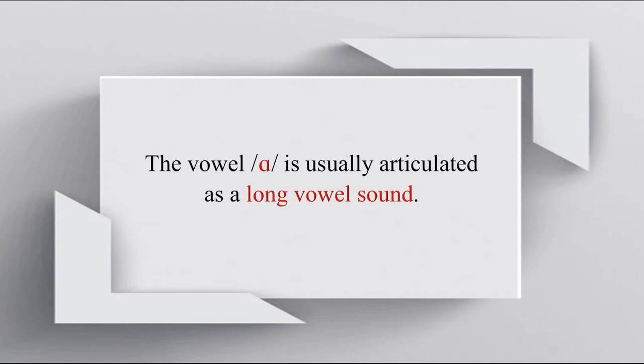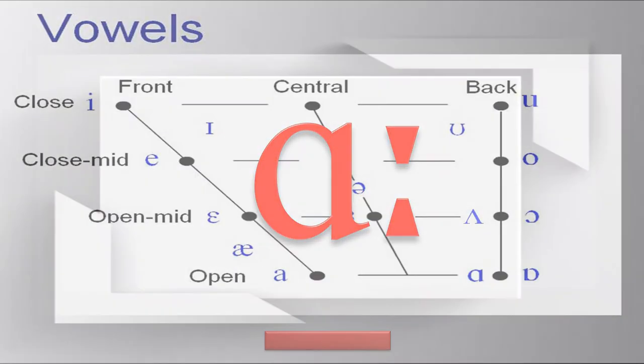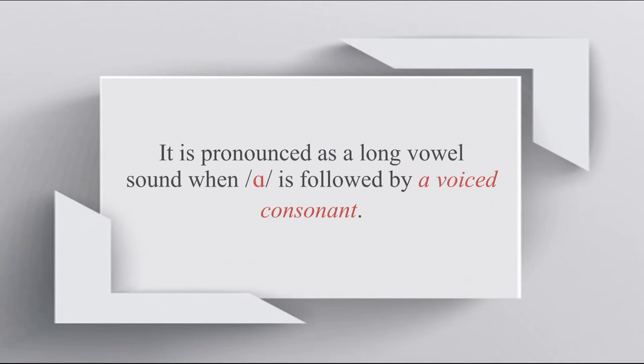The vowel AH is usually articulated as a long vowel sound. It is pronounced as a long vowel sound when AH is followed by a voiced consonant.